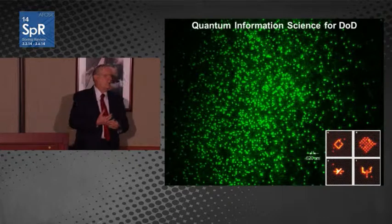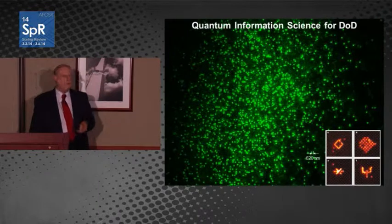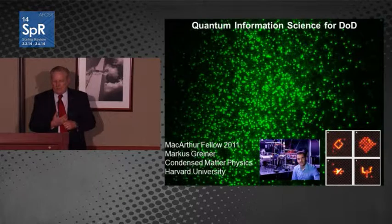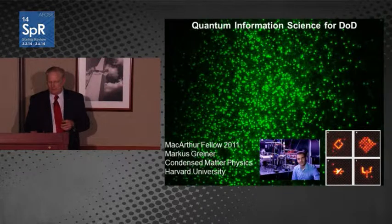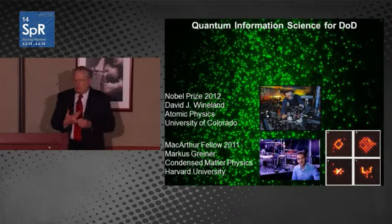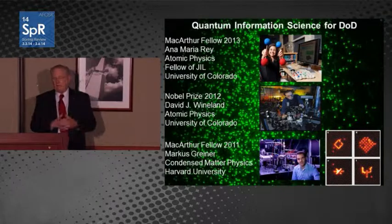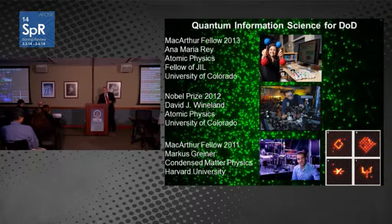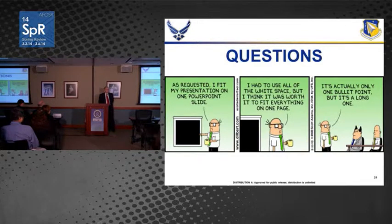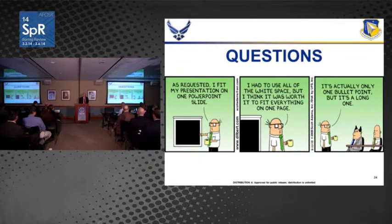Lastly, from Dr. Tatiana Kirchik's portfolio in atomic and molecular physics: in 2011, Mark Gruner received the MacArthur Genius Award for his work in condensed matter physics. The Nobel Prize was given to David Wineland in atomic physics at the University of Colorado in 2012, again part of Dr. Kirchik's portfolio. And this last year, another MacArthur Genius Fellowship was given to Ana Maria Rey in atomic physics. We feel that we do the best work that we possibly can for the United States Air Force, and with that I will ask if there are any questions.